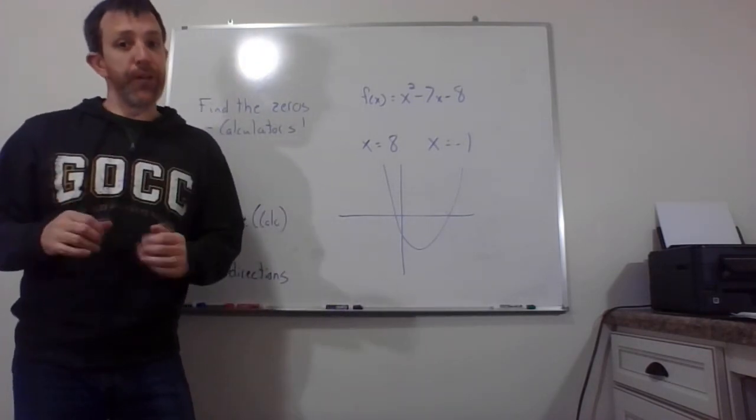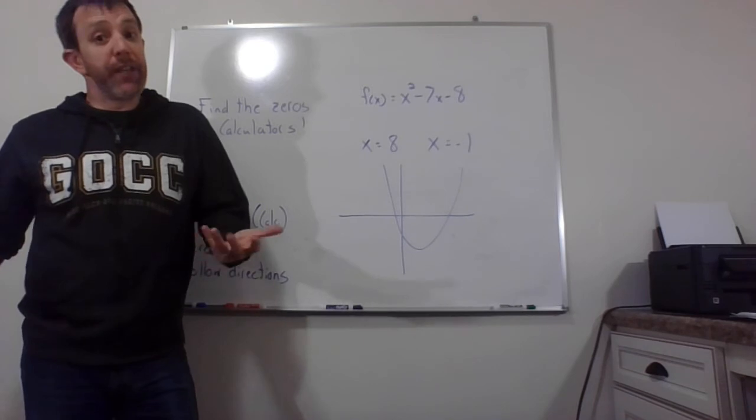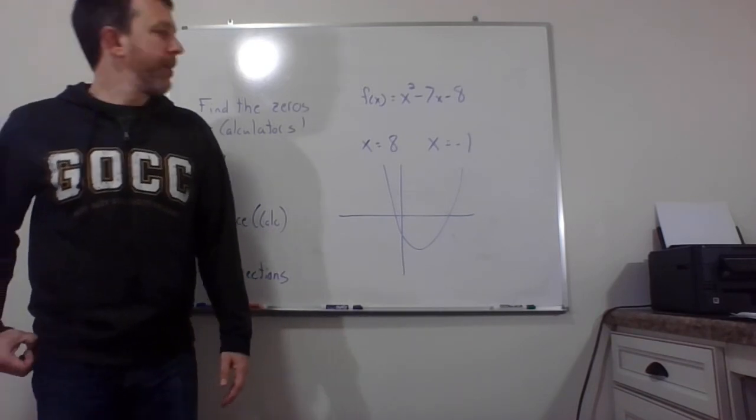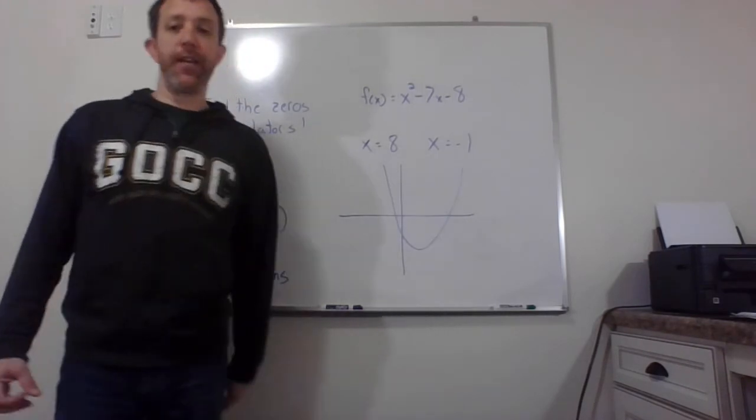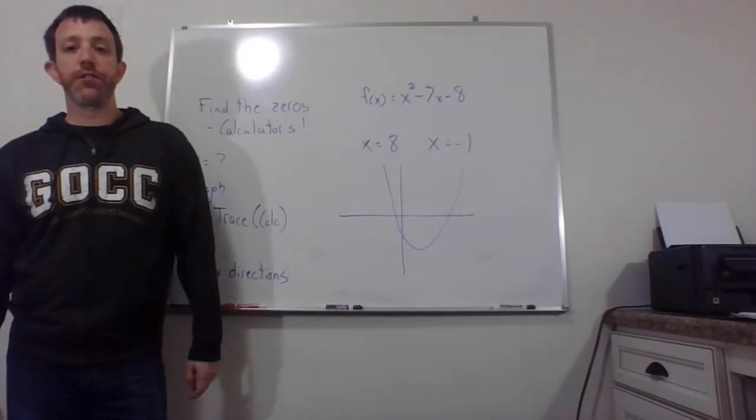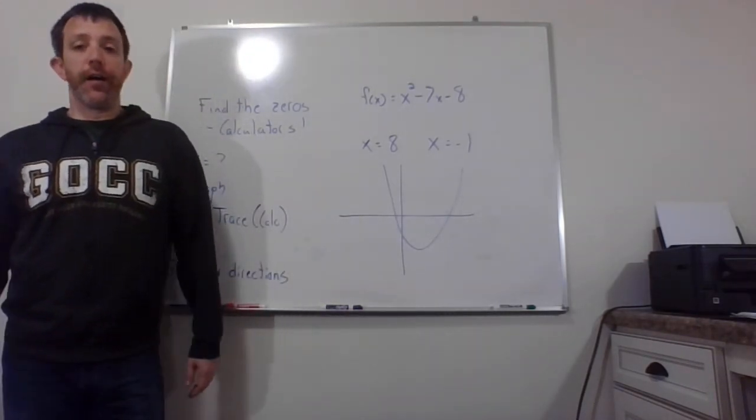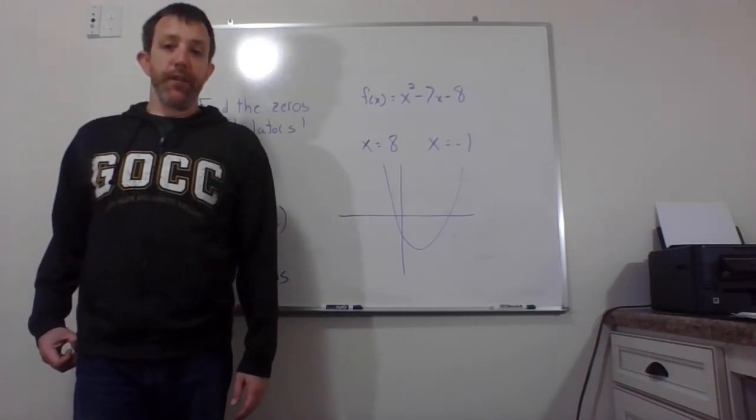And so the zero then would be the x value, right? The y value should be zero. That's kind of the whole point. But if you do that, these will be at negative one and at positive eight. And so that's a really nice trick for using your calculator as we go forward. And it'll be very useful.